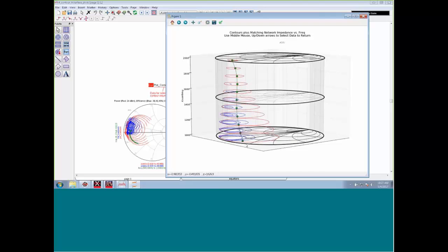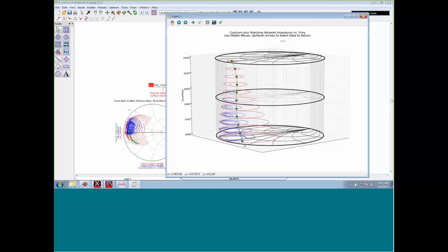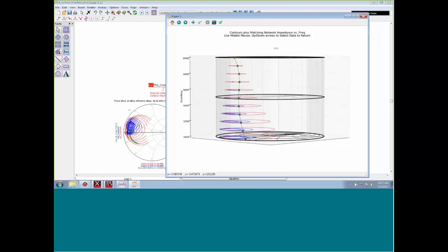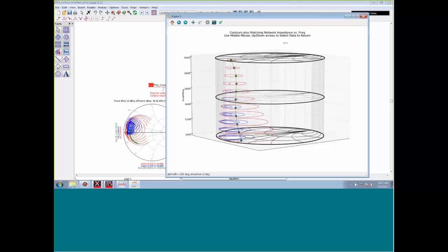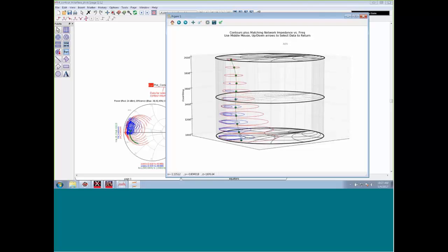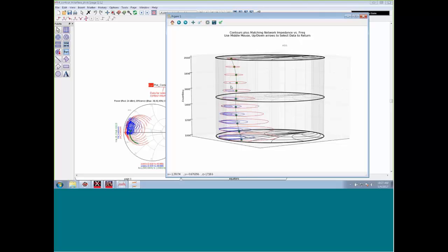Using this, we can really see how the matching network is stringing through the different contours. The other interesting thing is when we stretch out the contours like this, you can really see what's happening. As we increase frequency, the power contour is shrinking quite a bit. This is the same power contour across frequency. The efficiency contours actually completely evaporate above, say, 1700 megahertz or so. We start out with three power contours, and they eventually get down to two, then one, then zero.